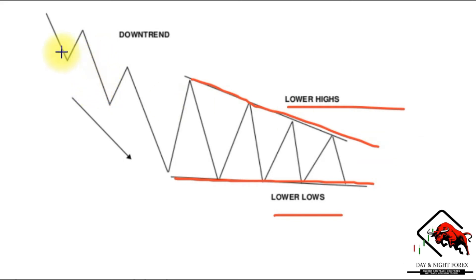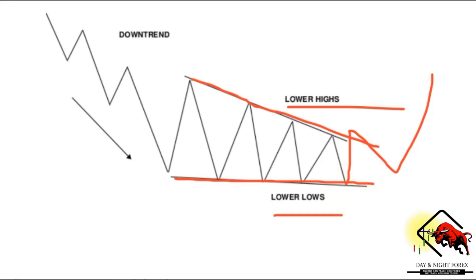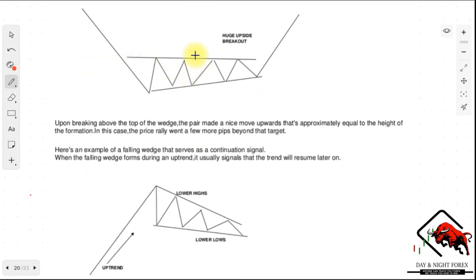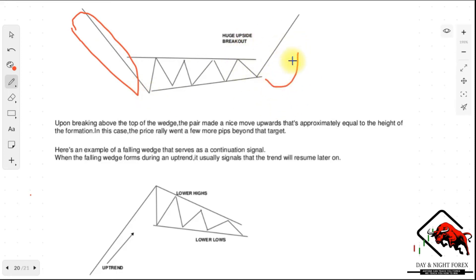When it is a downtrend, we are expecting the falling wedge to break out to the upside and act as a reversal pattern — the opposite of the rising wedge. As you can see, the pattern ended up producing a huge upside breakout, moving at least the same amount of pips as it moved on the way down. It is a reversal pattern of the downtrend — the bulls are now in charge of the market.